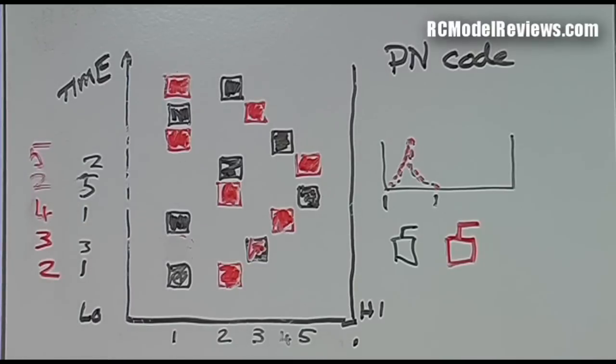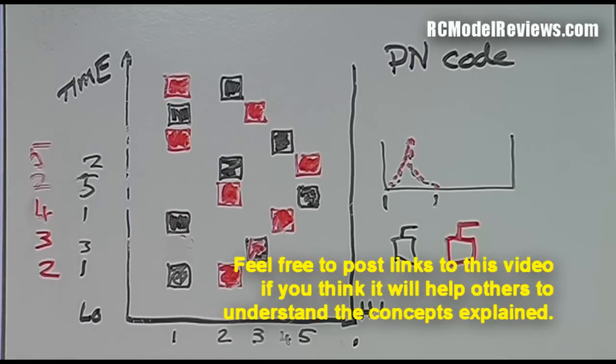It averages things out and that's how you can get more sensitivity, because it averages out the noise and leaves you with the signal. Sometimes you can get a lot of extra sensitivity doing that, thanks to these PN codes and this spreading. Of course, eventually if enough of these little squares get clobbered by another signal, then you will lose your data.